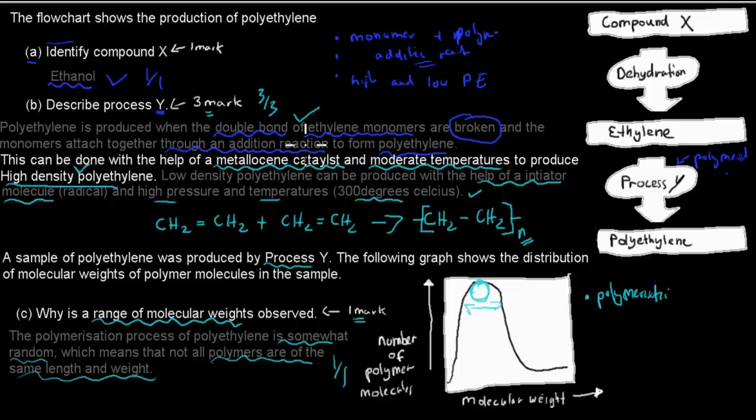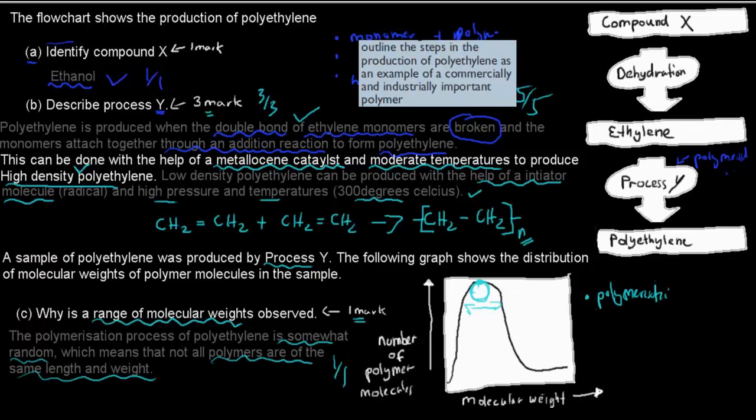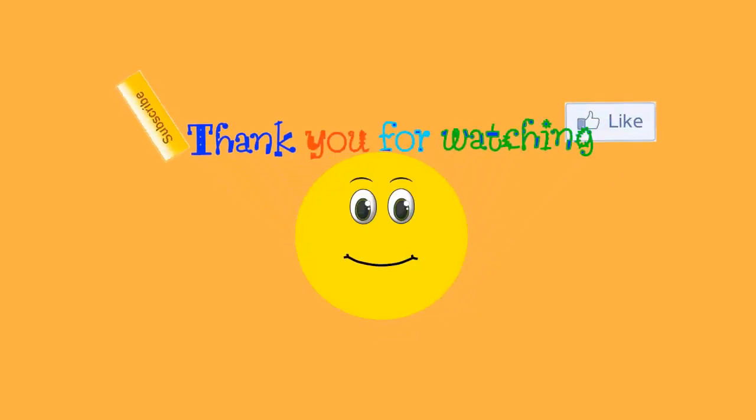So for this, we've gotten, this was a five mark question. And we've given this, not the same answer, but roughly had the same points in it. We've gotten five out of five overall. And where do these come from? They come from this dot point. Outline, which means we need to have the basic crunch of these kind of, of how these get produced. Outline the steps in the production of polyethylene, as an example of a commercially and industrially important polymer. In this case, that's what we talked about. We talked about polyethylene and how polyethylene gets produced. And these were the questions we were asking us as well. So hopefully that was useful. Thank you for watching.